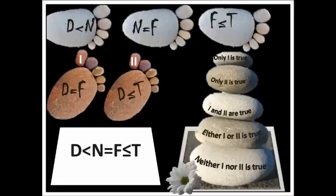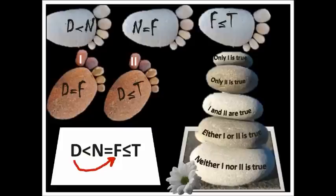Now verify the conclusions. Remember: less than and greater than have highest priority; greater than or equal to and less than or equal to have second highest; equal to has lowest. First conclusion is d equal to f. Symbols between d and f: less than and equal to. Less than has the highest priority, so the relation is d less than f. But conclusion one says d equal to f — so conclusion one is wrong.